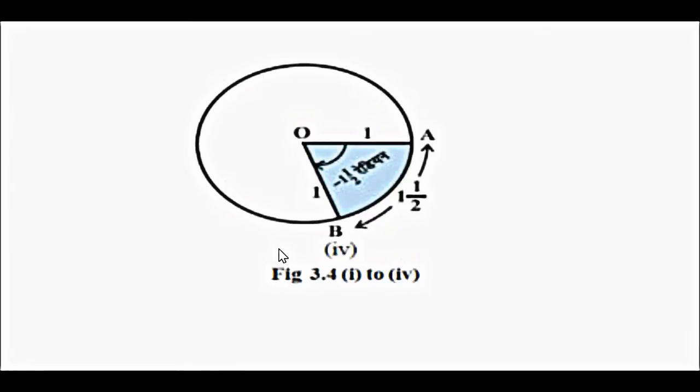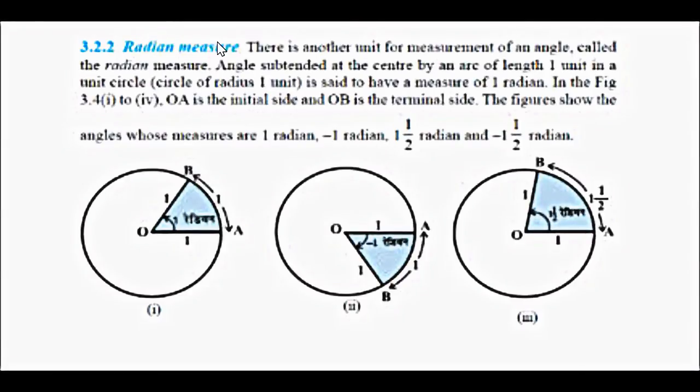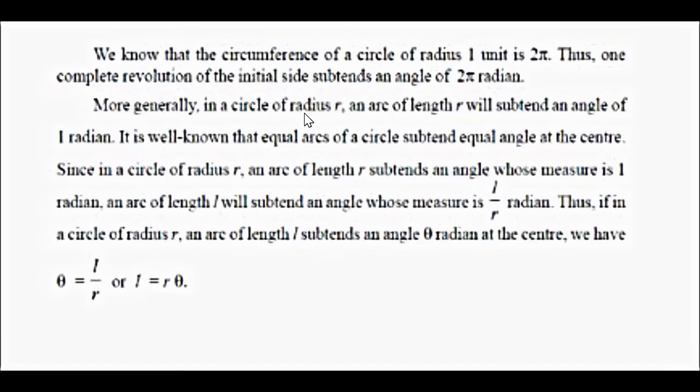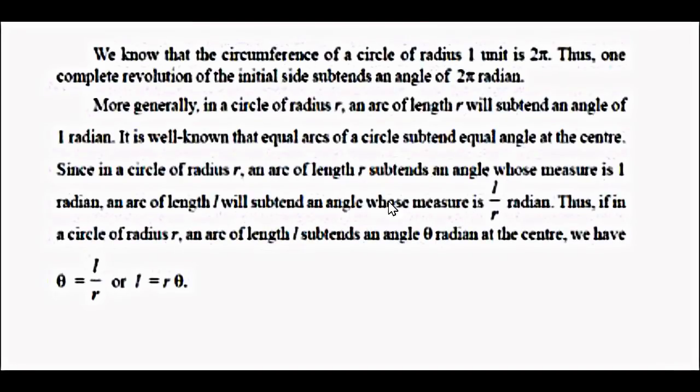Here the radian measure, because we are talking about the angle which is subtended by the arc. The biggest arc of a circle is the circumference or the whole perimeter basically of a circle. Circumference of a circle of radius 1 unit is 2π. We have learned earlier that 2πr is the circumference of the circle. If you place r equal to 1, you will get the circumference of a circle of radius 1 is 2π. So one complete revolution of the initial side will subtend an angle of 2π radians.